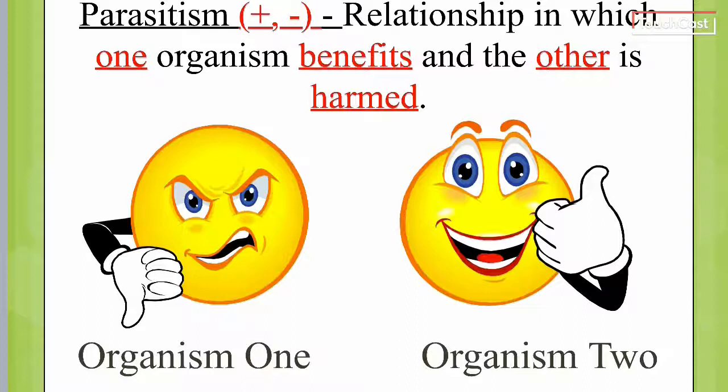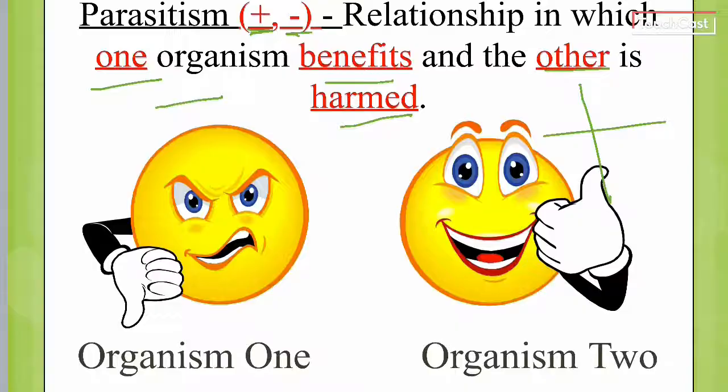The third type is parasitism. On the front cover: one is positive and one is negative. It's a relationship in which one organism benefits and the other is harmed — one has a negative and the other is a positive.